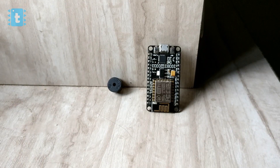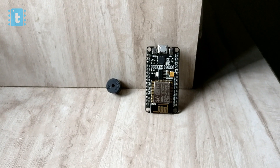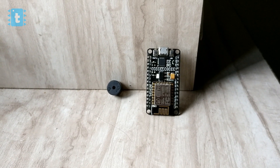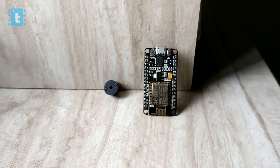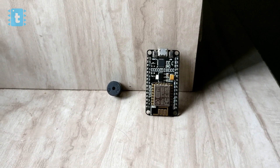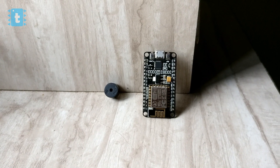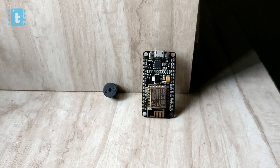Let's start making the Corner Stick. For the Corner Stick you will require one ESP8266-12E development board and one Piezo buzzer. The hardware connection of this stick is shown on screen.